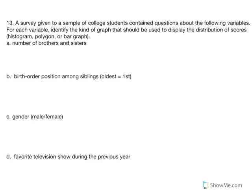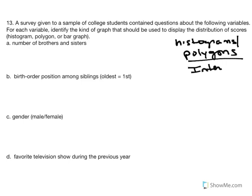Number 13. We're given some data — a survey given to a small sample that contained questions about several variables. For each variable, we need to identify the kind of graph that should be used to display the distribution of scores: histogram, polygon, or bar graph. From our reading, we learned that histograms or polygons require either interval or ratio data.